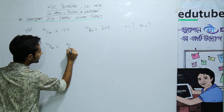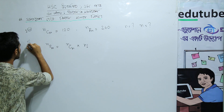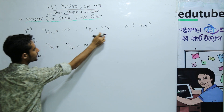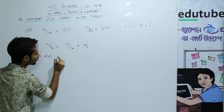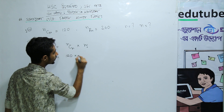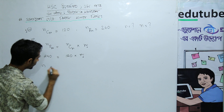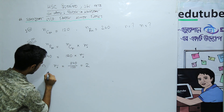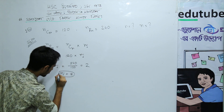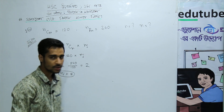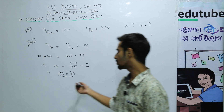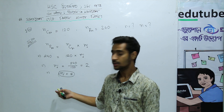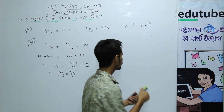NPR is equal to NCR times R factorial. That implies NPR is equal to 240, and 240 equals NCR value 120 into R factorial. So R factorial equals 240 by 120, which equals 2. Now I have to say R factorial is 2. So R factorial is equal to 2, which means R equals 2.